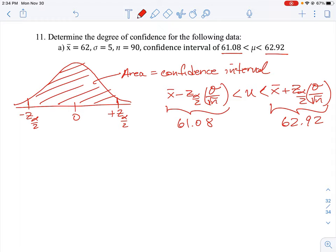So we can say the following here: 61.08 is equal to x̄ minus z_α/2 times σ all over root n. And what we're looking to do here is just calculate this z_α score. So we need to make sure that we have enough information here. So we do know what x̄ is, 62. We know σ here is 5, and we know the sample size is 90.